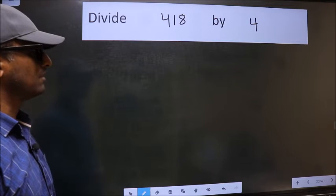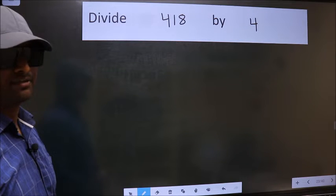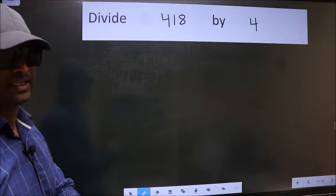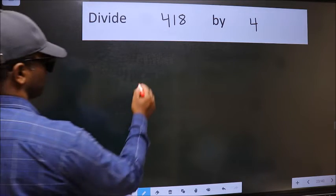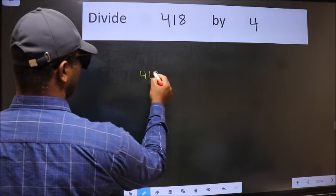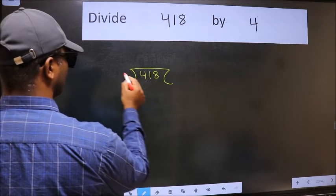Divide 418 by 4. To do this division, we should frame it in this way: 418 and 4 here.